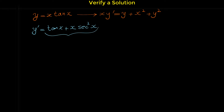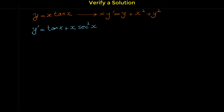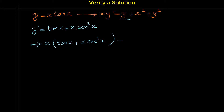Taking the derivative of x times tangent x using the product rule: the derivative of x is 1 times tangent x, plus x times the derivative of tangent x, which is secant squared x. So y prime equals tangent x plus x secant squared x. We replace y prime with this and replace every y with x tangent x.